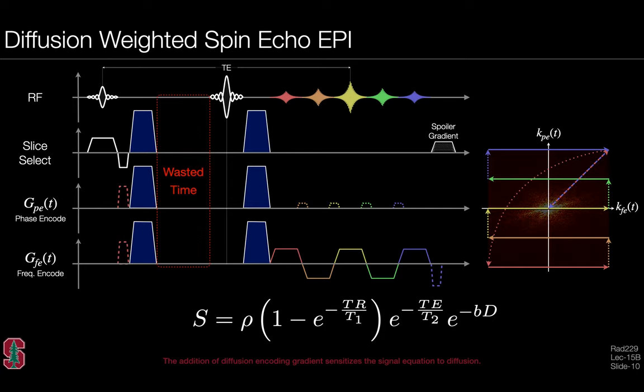One additional point, which will be revisited in a later lecture: by delaying the 180° time and using this simple gradient waveform design, there is some 'wasted time' during which the sequence is not actively encoding, decoding, or spoiling. There are interesting ideas about how this wasted time might be used to increase overall sequence efficiency or SNR efficiency.